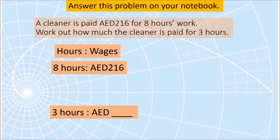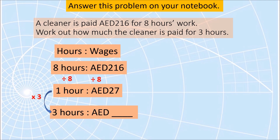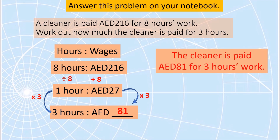We will find how much is paid for one hour by dividing the ratio by 8. Eight divided by 8 is 1 hour, and 216 divided by 8 is 27 dirhams. So for one hour the cleaner is paid 27 dirhams. To get three hours, multiply 1 hour by 3 — that gives 3 hours. Do the same on the right: 27 times 3 gives us 81 dirhams. For three hours of work the cleaner is paid 81 dirhams.